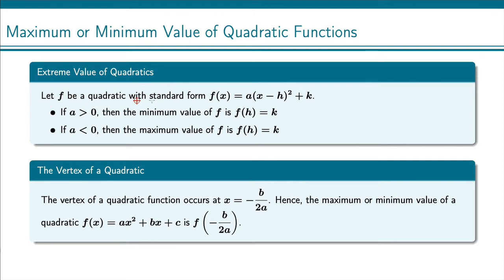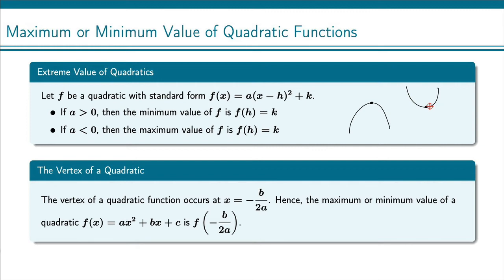So if you have a quadratic and it's written in this form here — which some people call standard form, some call vertex form, some call graphing form — we know our vertex is at (h, k), and that is where our extreme value of a quadratic will occur. If I draw a quadratic, it either opens upward or downward, and I've got a maximum or a minimum there at the vertex of the parabola.